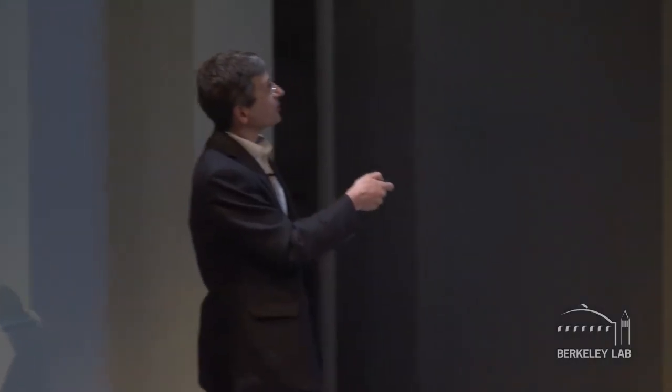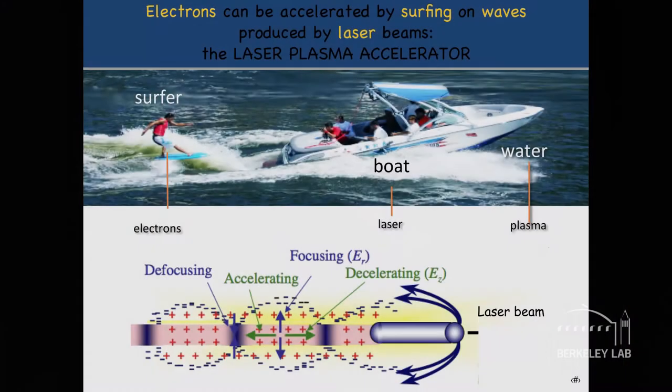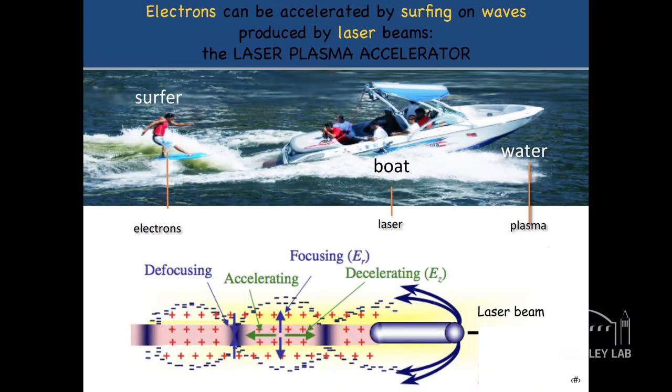So what we do is we think of our surfers as electrons, our boat is actually a laser pulse and the liquid, the equivalent of the liquid that the laser pulse has to go through is called a plasma and this is not the plasma that runs through your body, this is a very different plasma. This is an ionized gas.